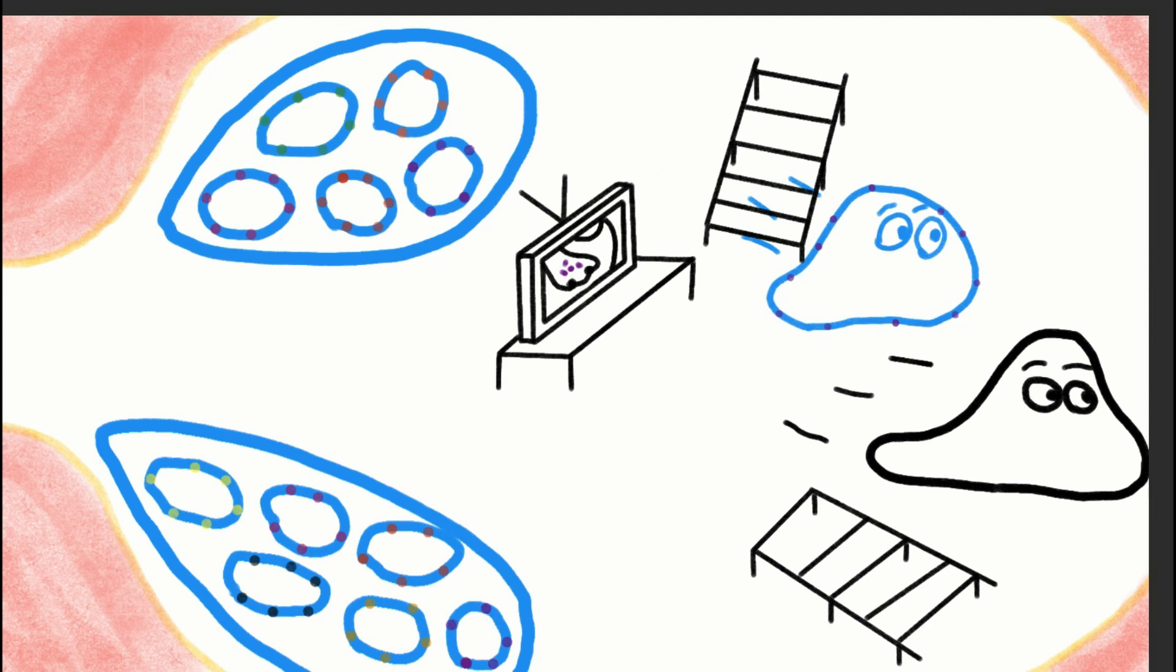Attention all cells, there's an invader in our human's nose. Please report to your stations. This is not a drill. I repeat, this is not a drill. And so the B and T cells jump out of their lawn chairs and race to gather the team. Let's go, B. We got this.